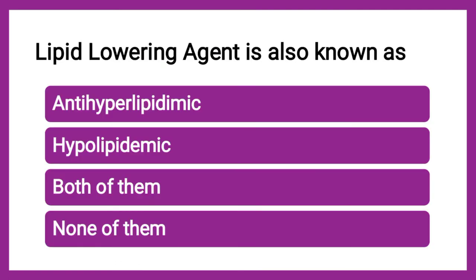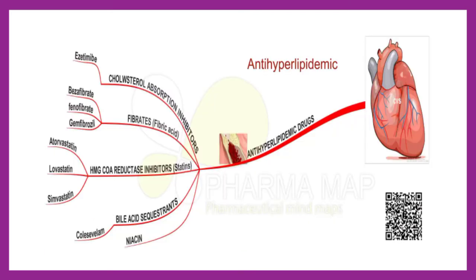Next question: Lipid lowering agent is also known as — anti-hyperlipidemic, hypolipidemic, both, or none. The correct answer is both. Anti-hyperlipidemic means against high lipid levels, and hypolipidemic means to lower lipids — both are the same. Examples include fibrates like clofibrate and fenofibrate, and statins like atorvastatin and simvastatin.